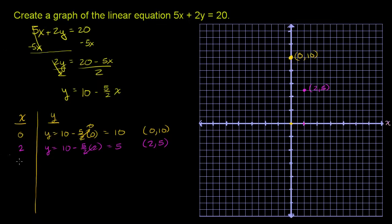So let me do, let's say when x is equal to 4, then y is equal to 10 minus 5 halves times 4. This is equal to 5 halves times 4. This is equal to 10, right?